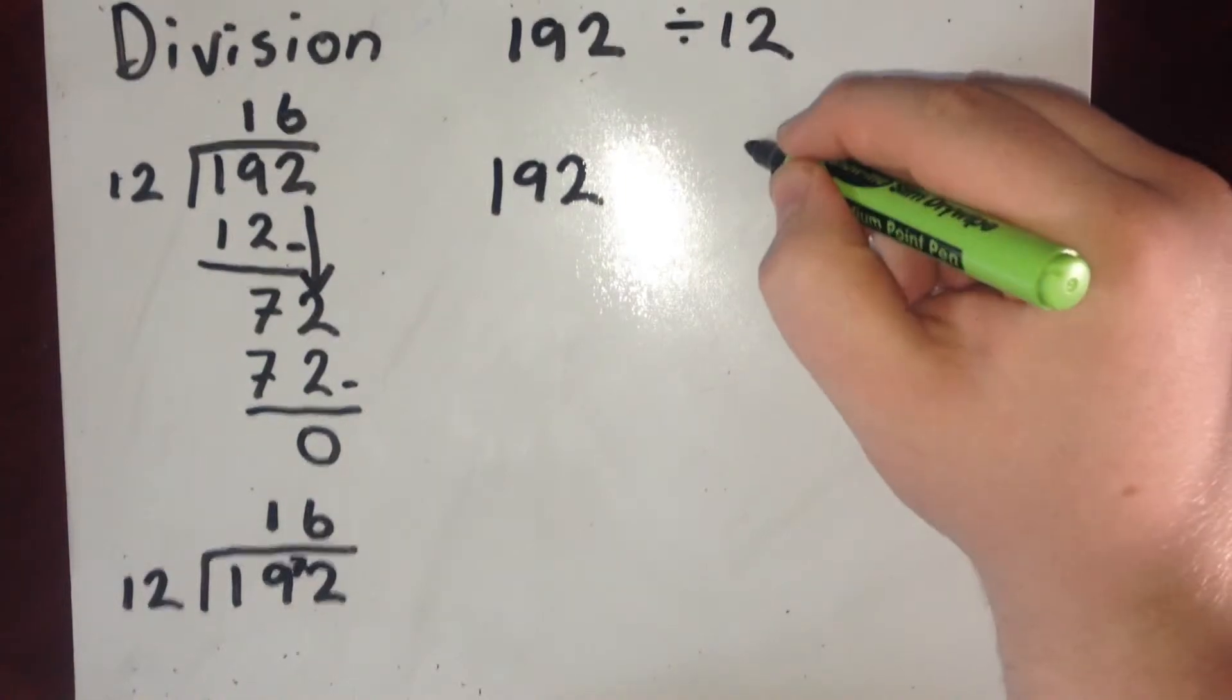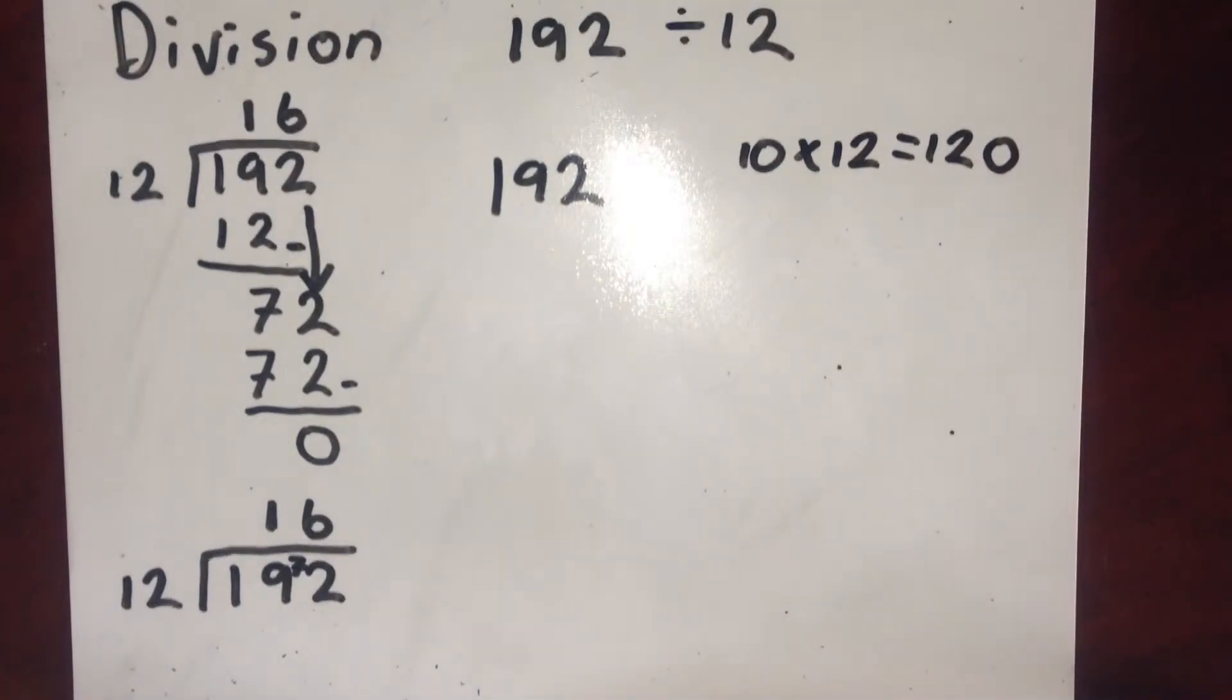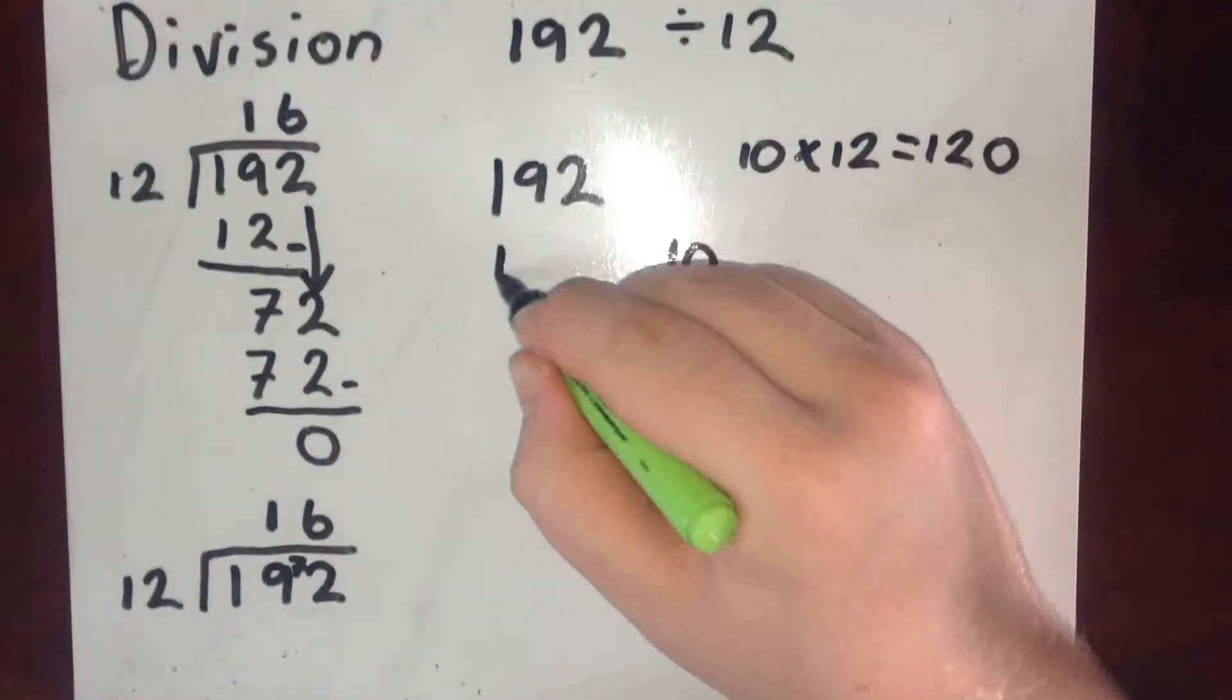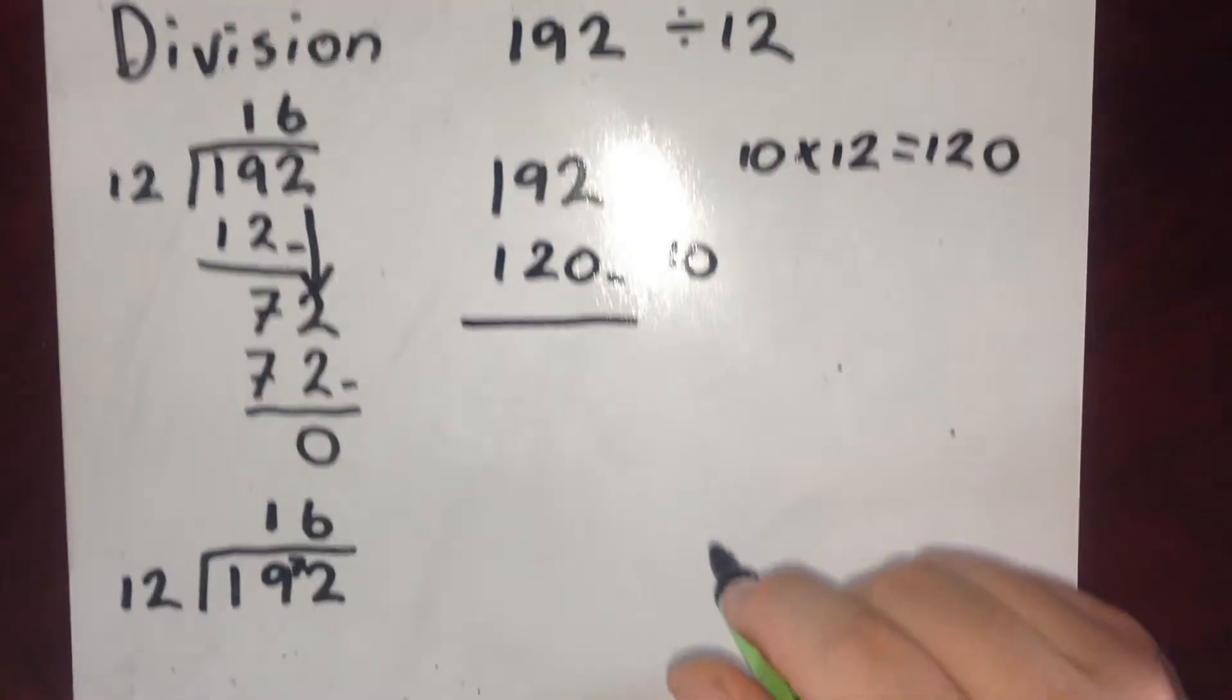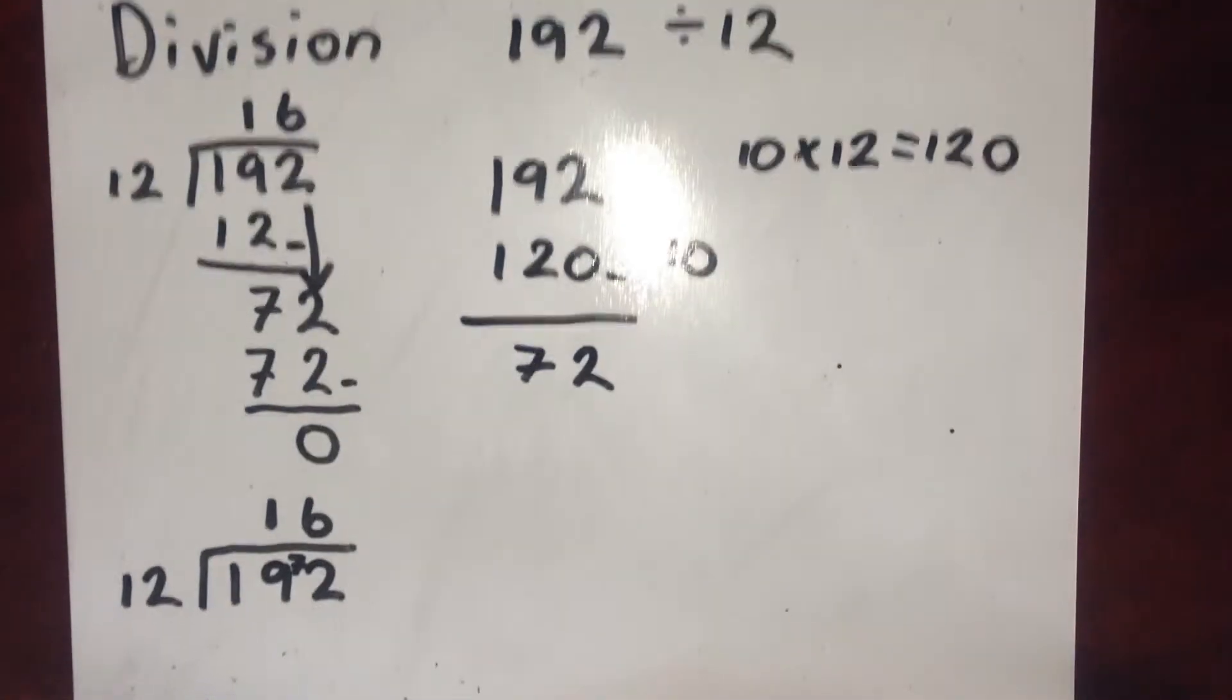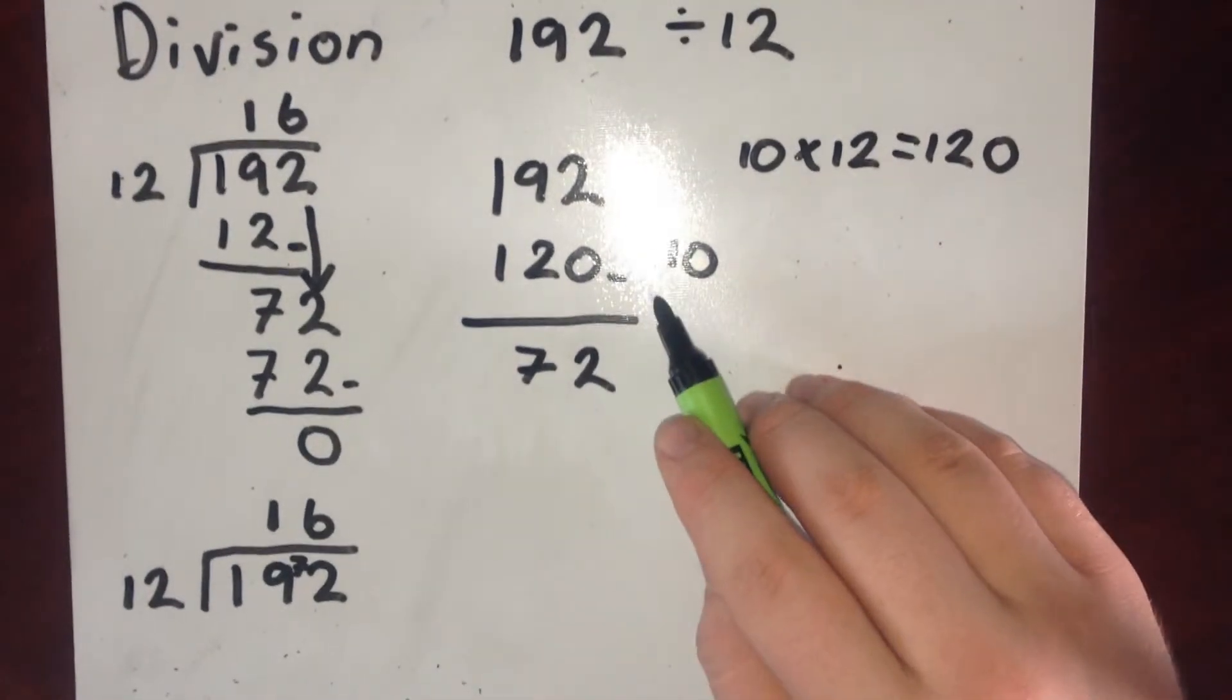I know that 10 lots of 12 is 120. So I could take away a big chunk of 10 12s. So that's 120 and take that away. 2 take away 0 is 2. 9 take away 2 is 7. 1 take away 1 is 0, so I'm not going to write that. So I've already made it an easy division.